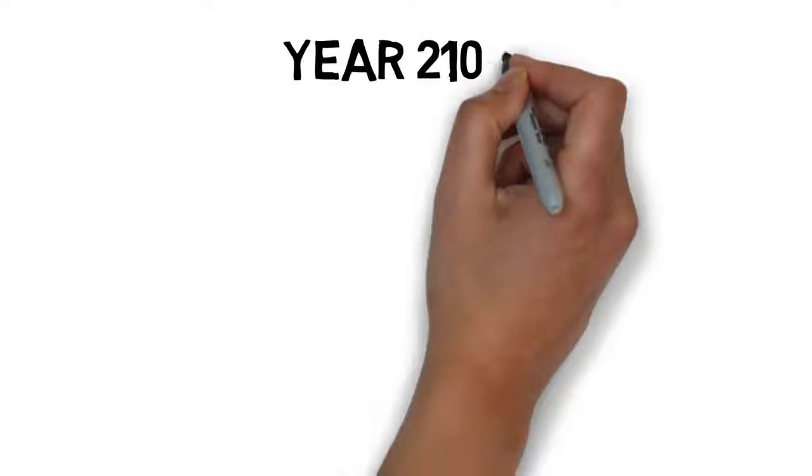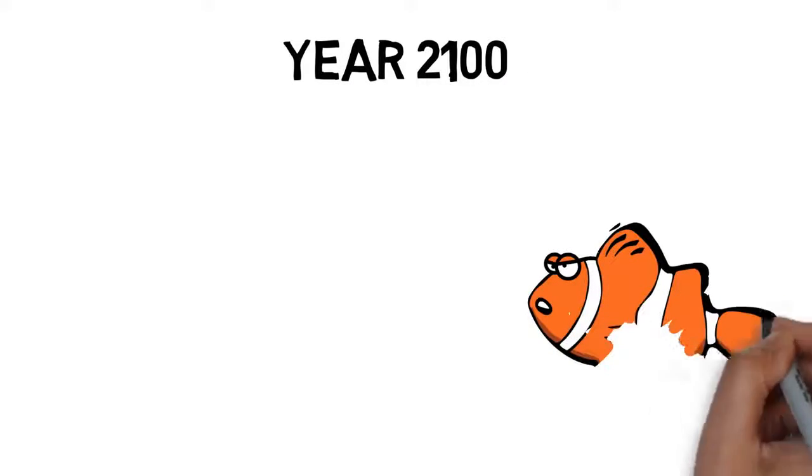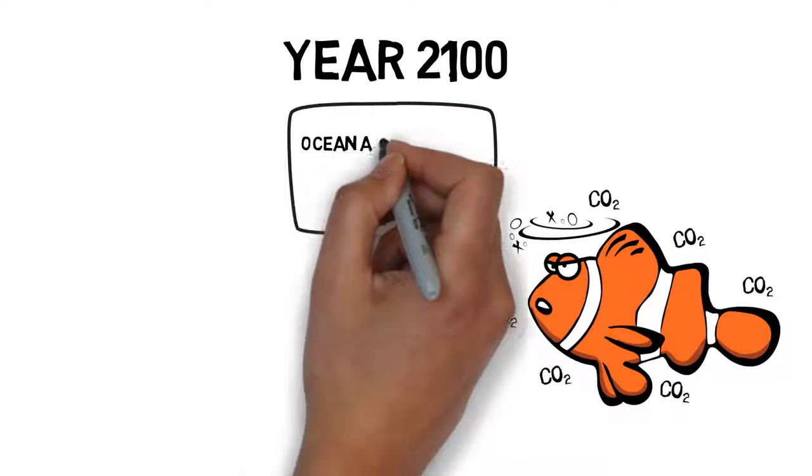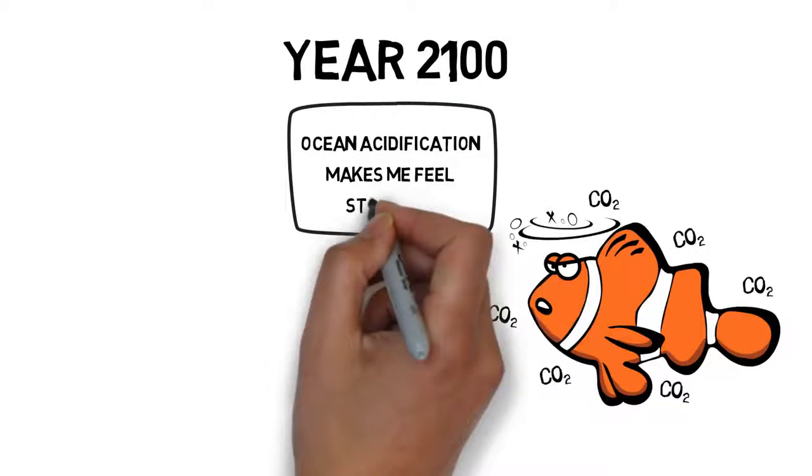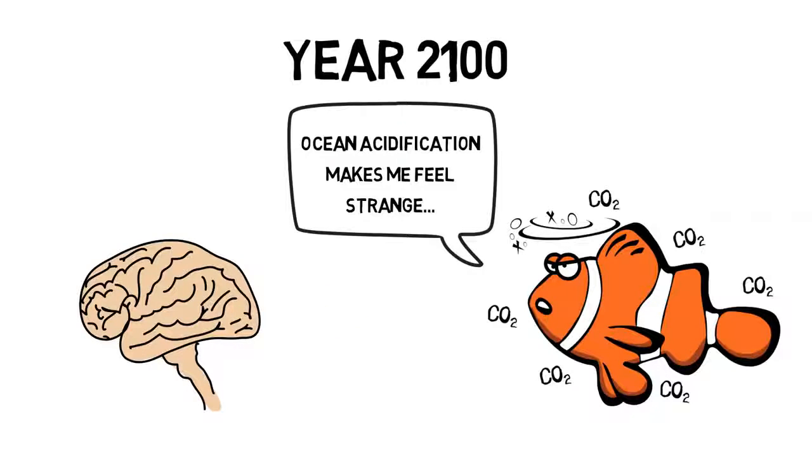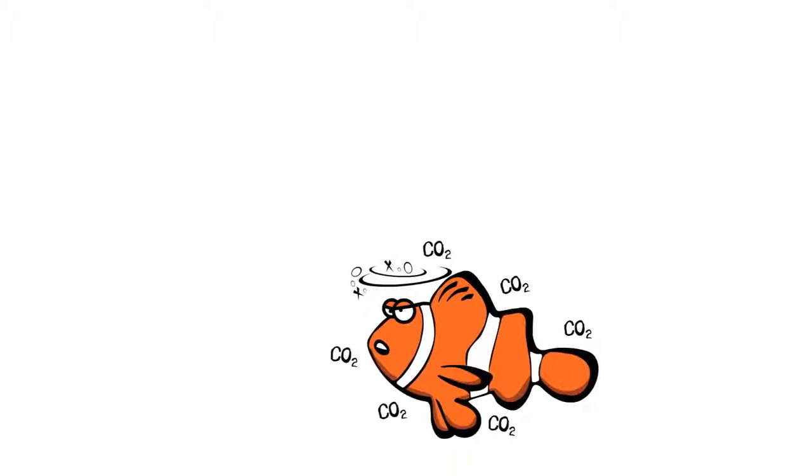Scientists discovered that levels of ocean acidification like those expected for the end of the century will cause big problems to our dear Nemo. Ocean acidification messes up with the functioning of the brain of fish. The result is that they make very poor choices.